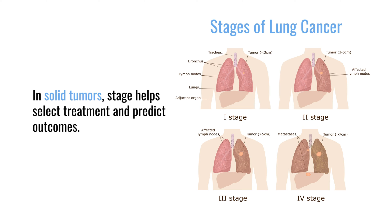In solid tumors like breast cancer, prostate cancer, and lung cancer, they're staged from stage 1 to stage 4. Typically, stage 1 solid tumors are simply removed either by surgery or radiation. Stage 4, we typically give chemotherapy. And stage 2s and 3s are some combination of surgery, radiation, or chemotherapy.